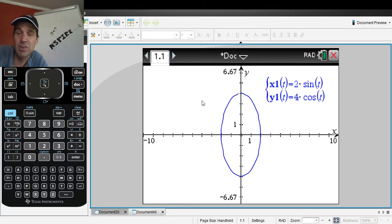Because right now this just shows you what it looks like, but it doesn't show you where it started when t was zero or what direction it went in.